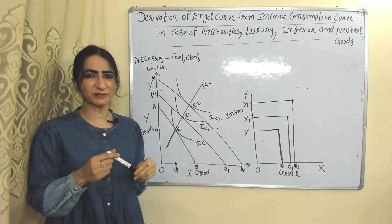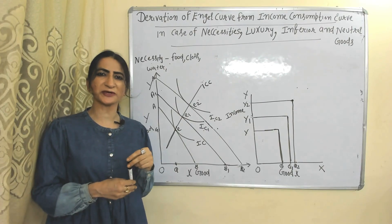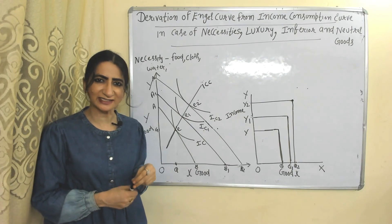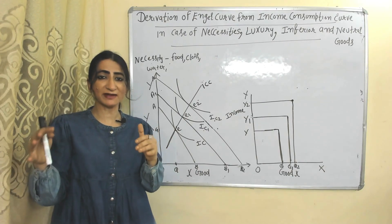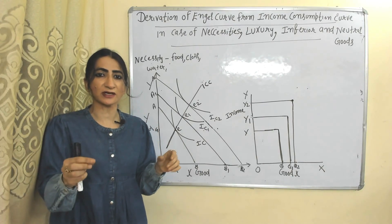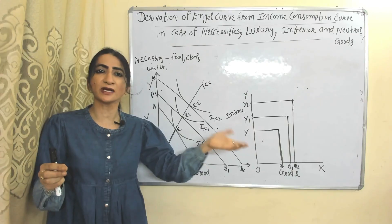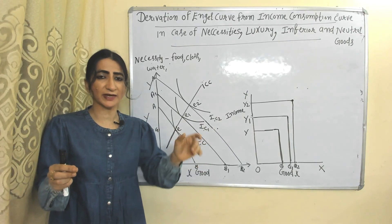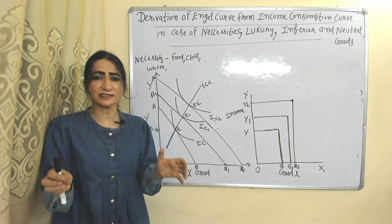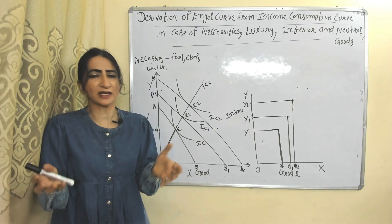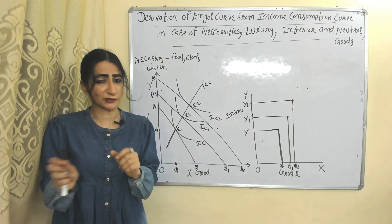Hello everyone, my name is Minis. I hope you all are staying healthy. Today we are going to talk about derivation of Engel curve from income consumption curve in case of necessity, luxury, inferior, and neutral goods.